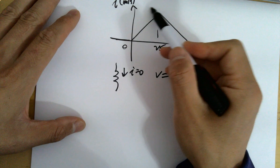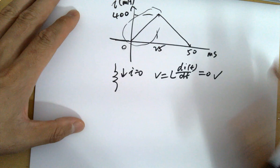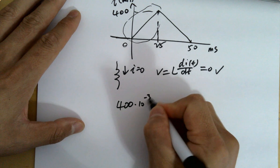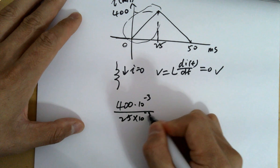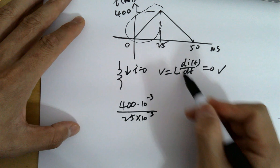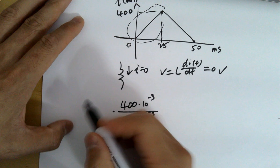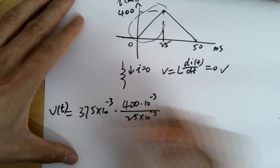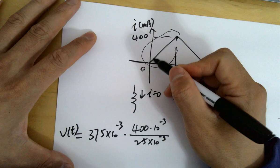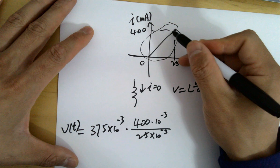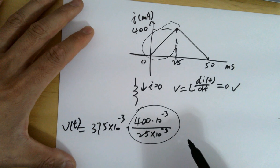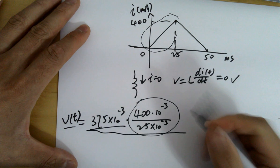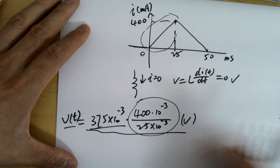During the rising period, the current goes up to 400 milliamps over 25 milliseconds, giving a constant slope of 400 mA / 25 ms. That slope is di/dt, and multiplied by the inductance of 375 millihenry, it gives the voltage. Since the slope is constant and inductance is constant, the voltage during this period is a flat line — a constant value.